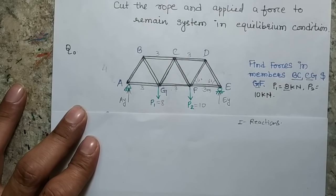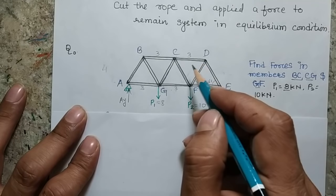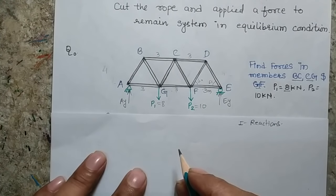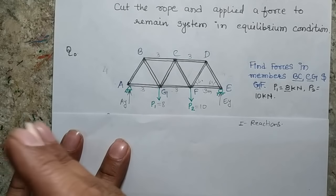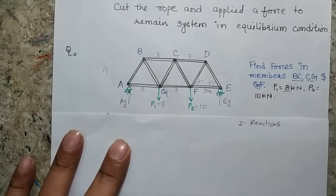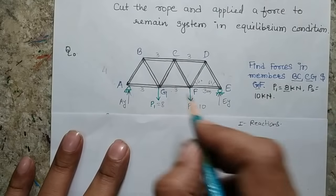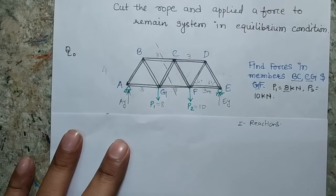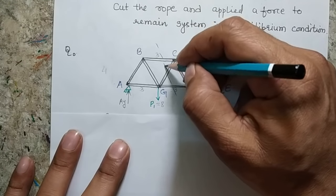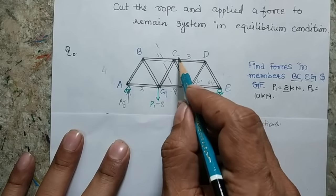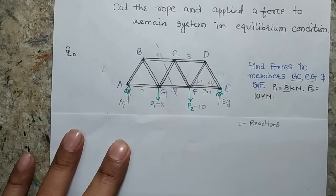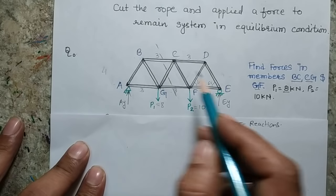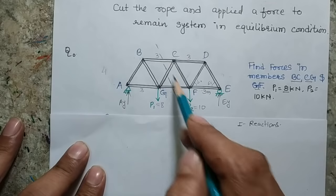In the method of section, the benefit is that if we use one section cutting all the unknown members, we can get all the unknowns in one shot. I want to cut the truss so that members BC, CG, and GF are all cut at once. As I cut along this section, members GF, GC, and BC will be severed. One section will be the part containing joints A, B, and G, and the other section will be the part containing joints C, D, F, and E.